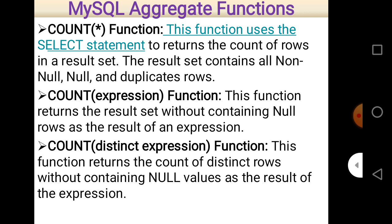COUNT(DISTINCT expression) returns the count of distinct rows without containing null values as a result of the expression. If there is a duplication of records in a table, COUNT(DISTINCT expression) counts each distinct value only once. If there are five duplicate values, it counts only one. DISTINCT is a keyword meaning unique, so every unique value is counted only once.